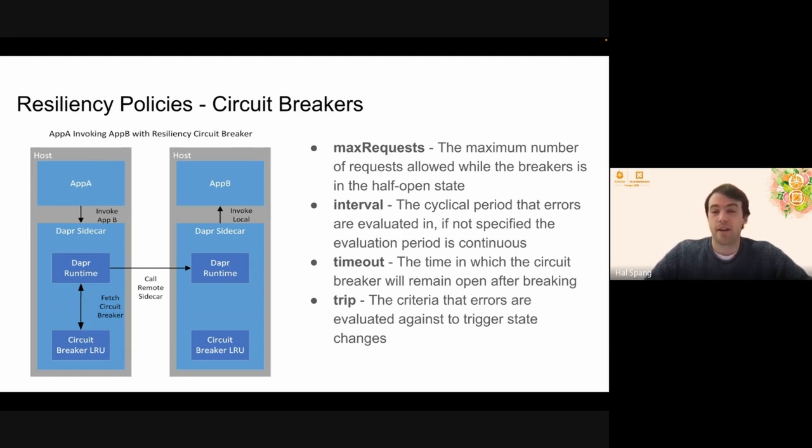The next thing we look at is actually the interval, which is the cyclical period that errors are evaluated in. So that means that we have a rolling window where we're looking for a certain number of errors or a certain condition to be set. And if that condition is met, then that's when the circuit breaker opens. So we're looking for failure scenarios here as opposed to anything else. If you don't specify an interval, it just aggregates forever.